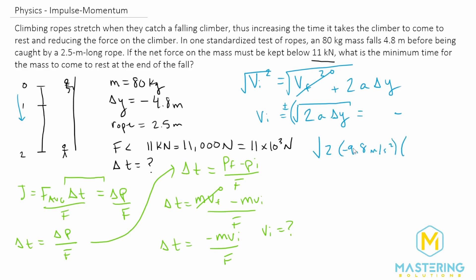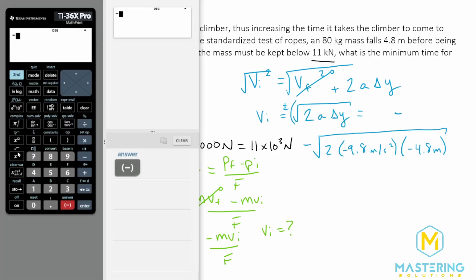Times that's a negative, of course, times a negative 4.8 meters, which is the change in the y direction. We square root all of that and we'll be taking the minus, so we have negative square root of two times negative 9.8 times a negative 4.8.